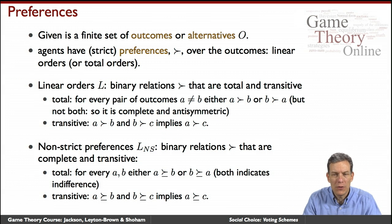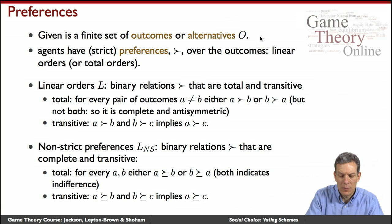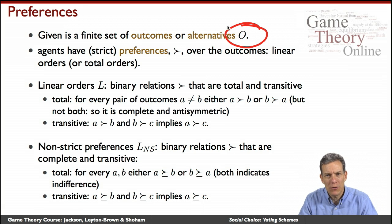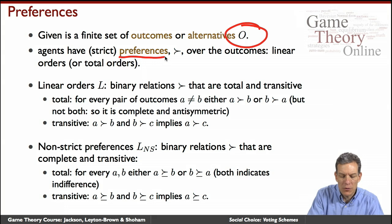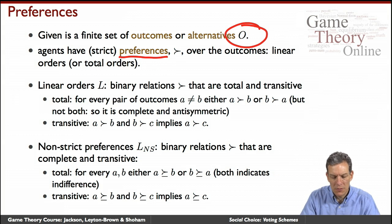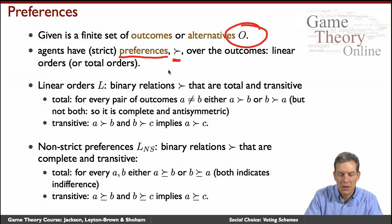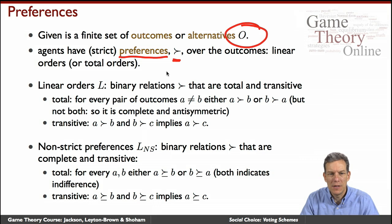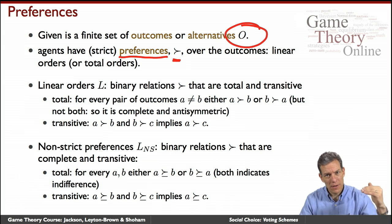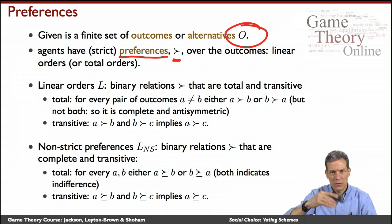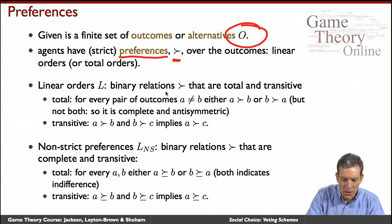So given is a set of outcomes or alternatives — that's going to be the set O. People are going to have preferences over these, represented in a very simple form. Generally, agents are going to have strict preferences, so we'll eliminate indifferences. That's going to be represented by linear orders, denoted by L — the set of linear orders over the alternatives.